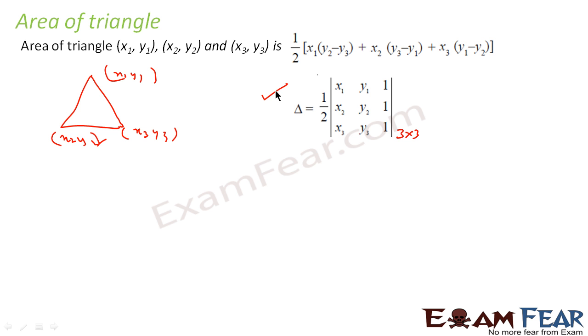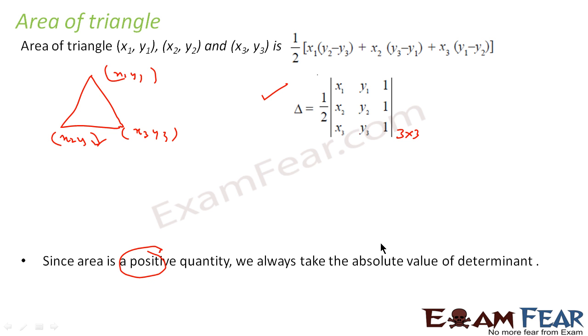Please note this formula. Critical formula will be using this area of triangle to be 1 by 2 determinant of x1, y1, 1, x2, y2, 1, x3, y3, 1. And please note the area of triangle is always positive because the area is always positive. So we always take absolute value of determinant. Even if it comes out to be negative, we take the positive part, absolute value.